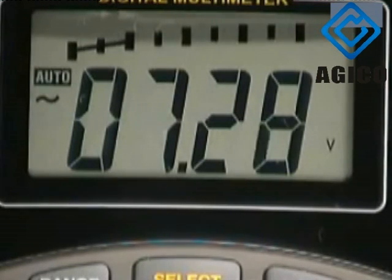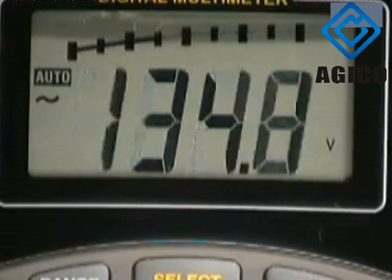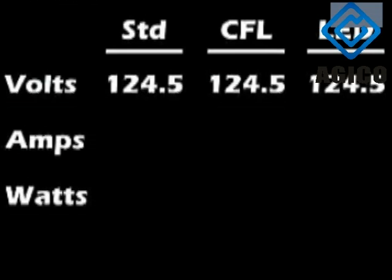If we zoom in on the multimeter, you can see that when the testing device was turned on, the voltage jumped from about 7 volts to 124.5. A voltage of 124.5 should be consistent for all three light bulbs, so we'll go ahead and enter it in the data table.